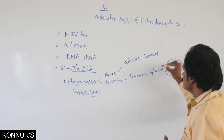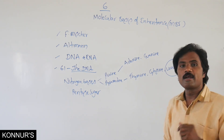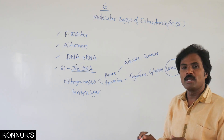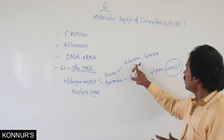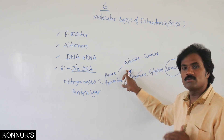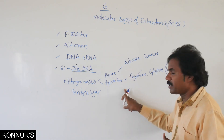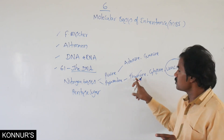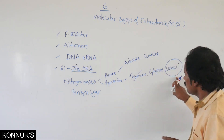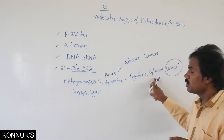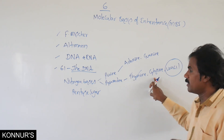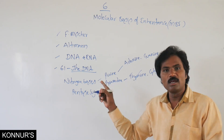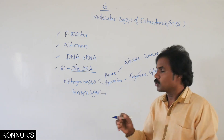If uracil is present in RNA, whereas in DNA, thymine is present. Adenine and guanine are common to both RNA and DNA. Cytosine is also common to both. What is the pentose sugar present? If it is DNA, deoxyribose sugar is present.